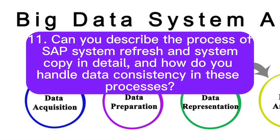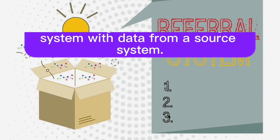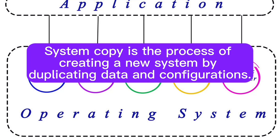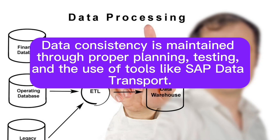Question 11: Can you describe the process of SAP system refresh and system copy in detail, and how do you handle data consistency in these processes? Answer: SAP system refresh involves overwriting the data in a target system with data from a source system. System copy is the process of creating a new system by duplicating data and configurations. Data consistency is maintained through proper planning, testing, and the use of tools like SAP data transport.